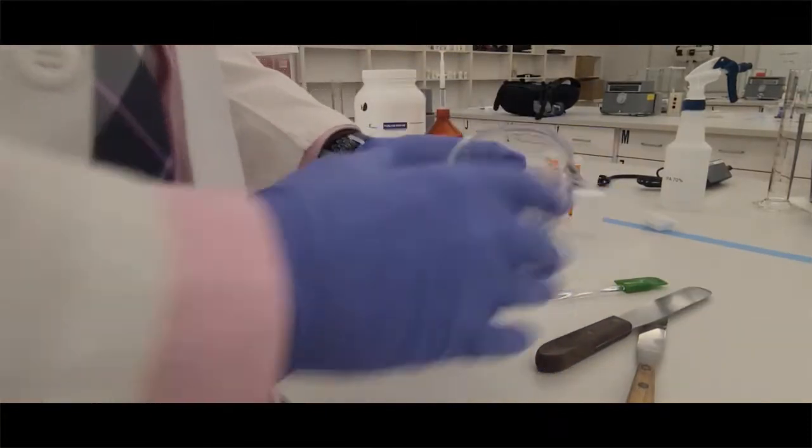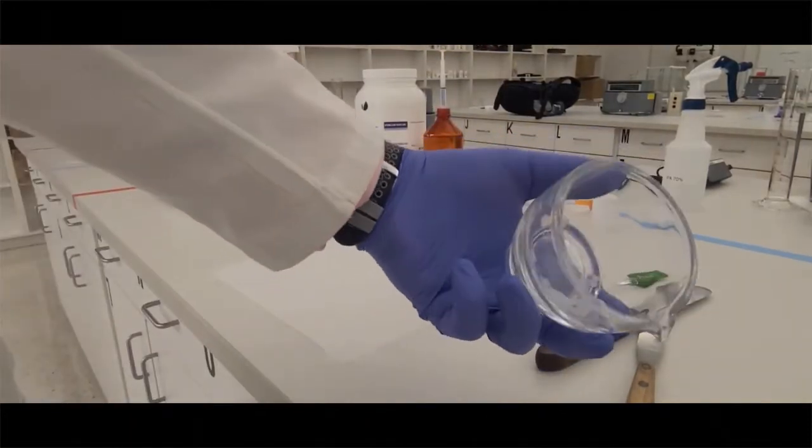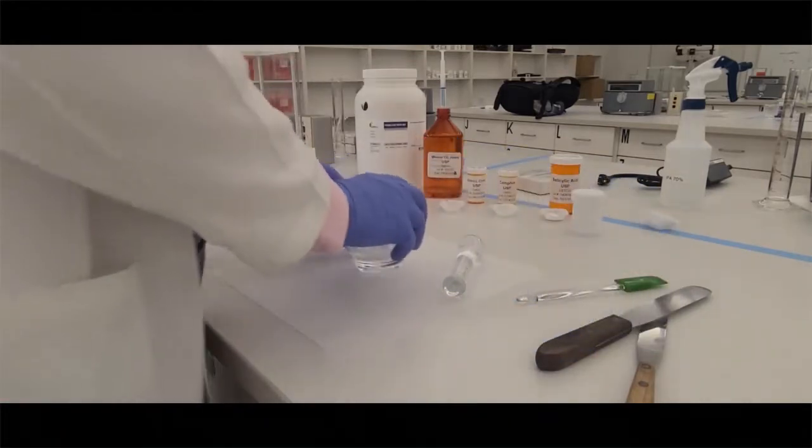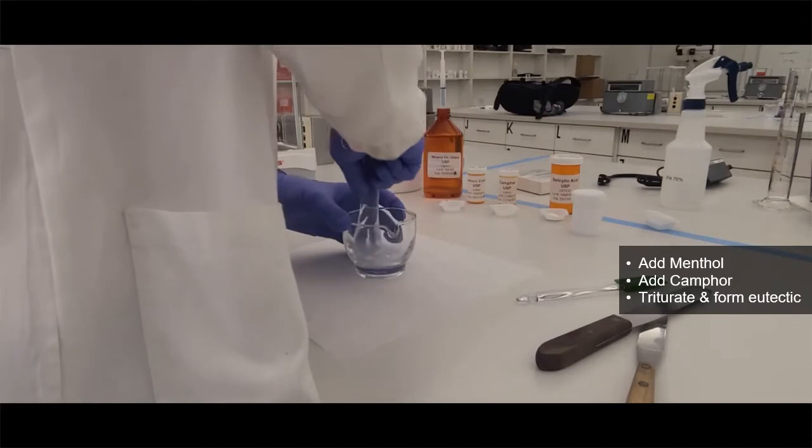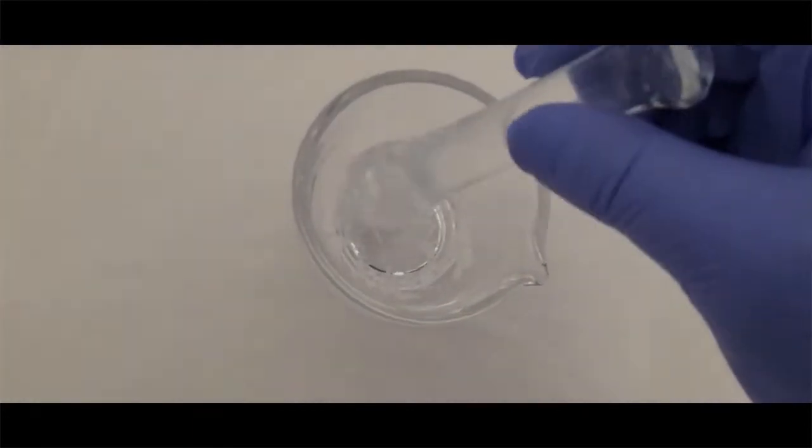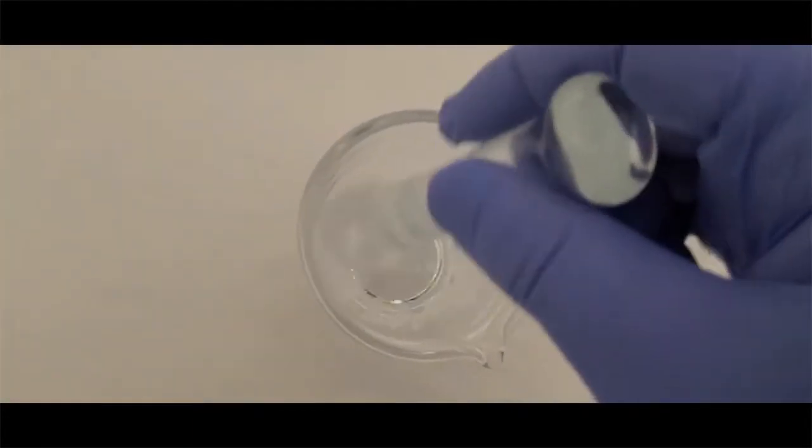So when you incorporate those into an ointment or cream, they're going to act very gritty. So here we're going to make the eutectic. You'll notice that I'm going to take the mortar and pestle and start triturating them. As I triturate them, and you'll see in this close-up shot that they start to liquefy. They almost turn into a syrup.